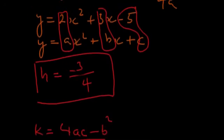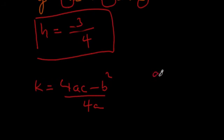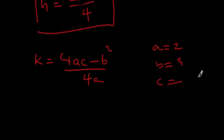Our a value is 2, our b value is 3, and our c value is -5. Let's take these a, b, and c values and plug them in to find k.